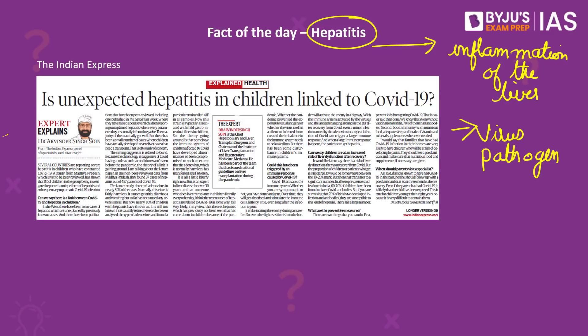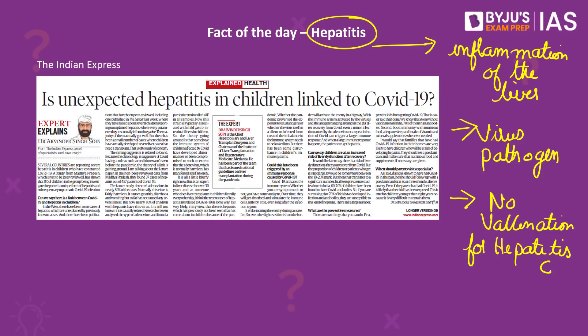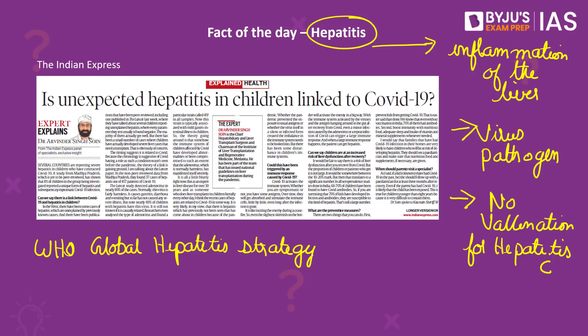Among the five types, type B and C lead to chronic diseases. While hepatitis A and hepatitis B have vaccines available, there is no vaccination available for hepatitis C. Hepatitis C virus is a blood-borne virus, and most infection occurs through exposure to blood from unsafe injection practices, unsafe healthcare, and unscreened blood transfusions. Under the WHO's Global Hepatitis Strategy, member states aim to reduce hepatitis infections by 90% and deaths by 65% between 2016 and 2030.